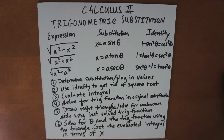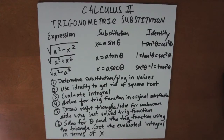If you have the expression the square root of a squared plus x squared, you would use the substitution x equals a tangent theta and the identity 1 plus tangent squared theta equals secant squared theta.